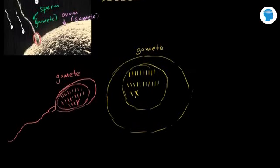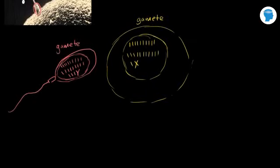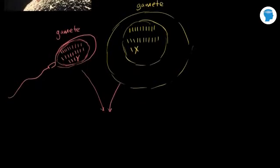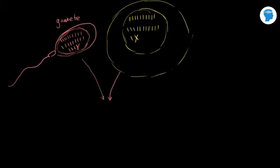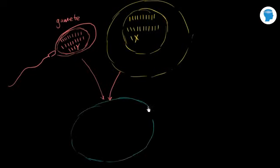Now, once these two things are fused, what do we have? Once they're fused, we have what you could call a fertilized egg, but we're going to call that a zygote. Let me draw that — I'll do this in a new color. I'm running out of space, but I want this all to fit on the same screen.